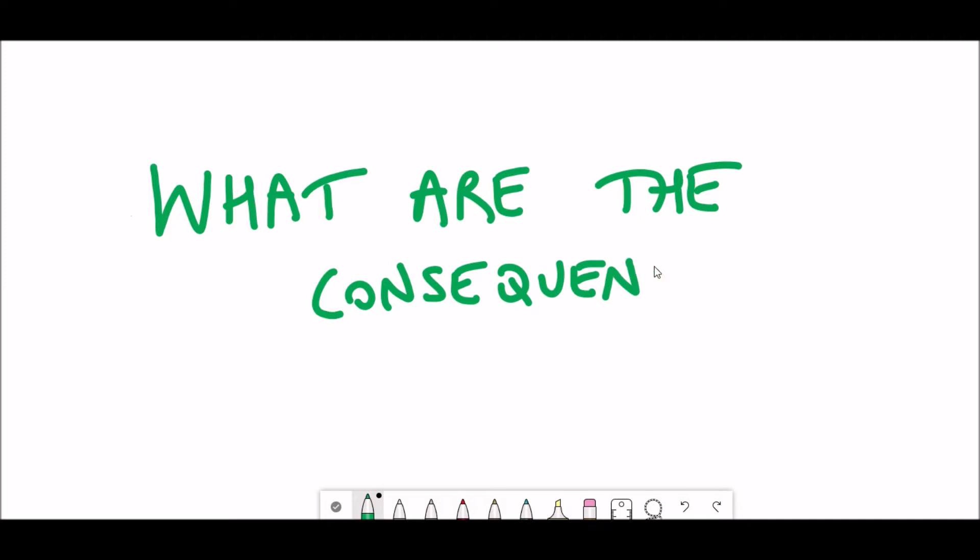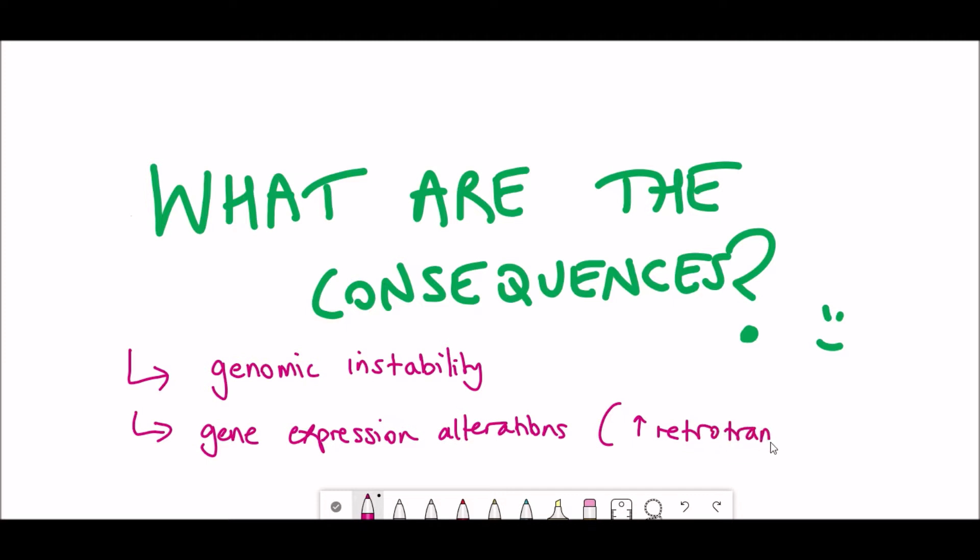So what are the consequences of these changes in epigenetic marks during aging? One thing is that these changes in marks obviously alter gene expression, but they can also result in genomic instability which could increase the mutation rate and chance of cells becoming cancerous. These gene expression changes can also allow regions of DNA that were previously silenced, such as retrotransposons, to now be expressed, and that can have severe consequences for a cell.